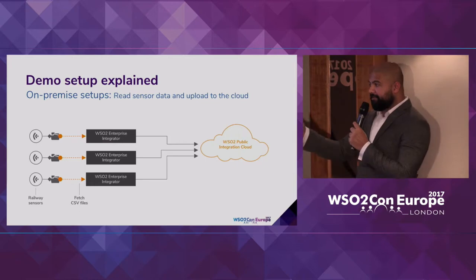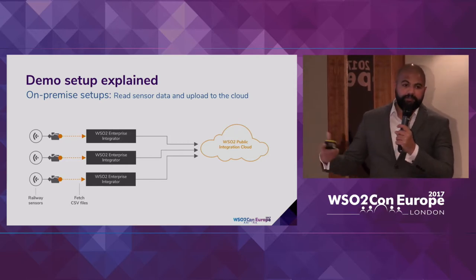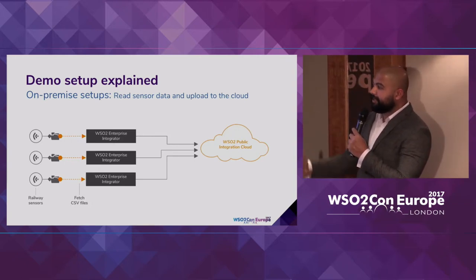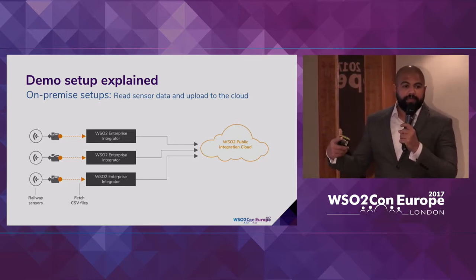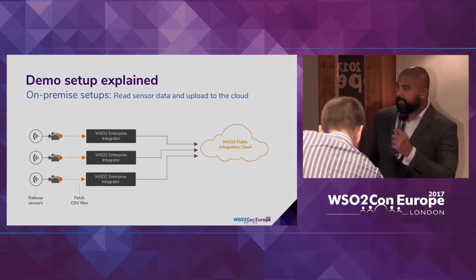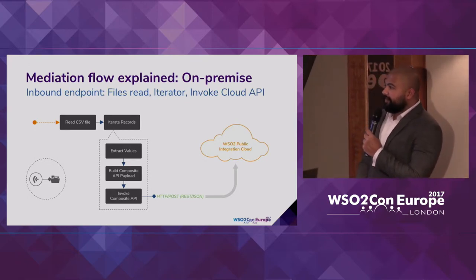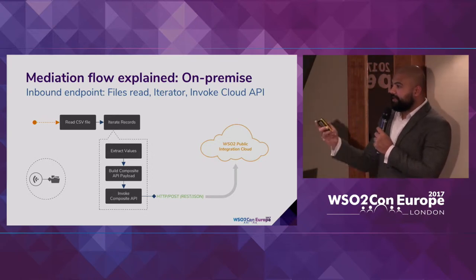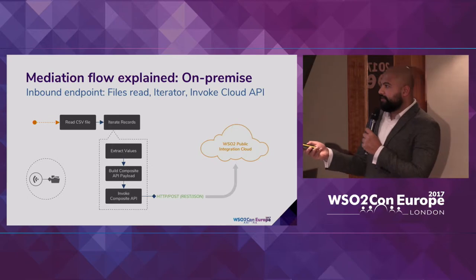We don't have a sensor setup here, so I will be doing a manual file copy into a particular directory instead of the sensor. The on-premise enterprise integrator installation has to read these files, extract records, iterate records, and invoke the API hosted on the public integration cloud. The mediation flow first reads data in CSV file format, iterates records, and for each record extracts values, builds the relevant API payload, and invokes the composite API, which should ultimately update the data service and invoke the microservice and do the Twitter update.